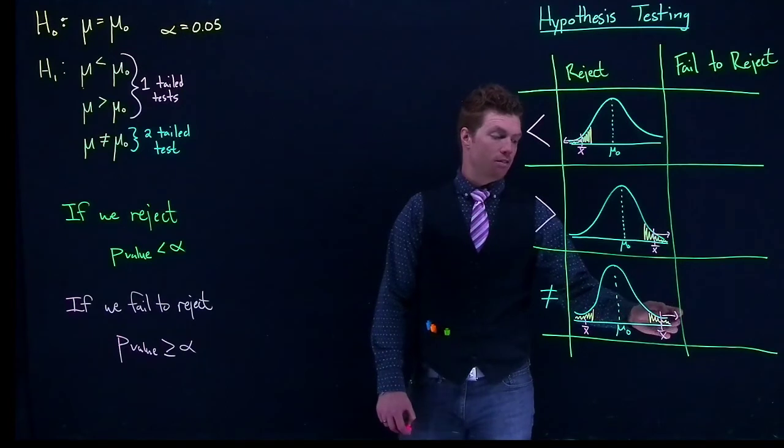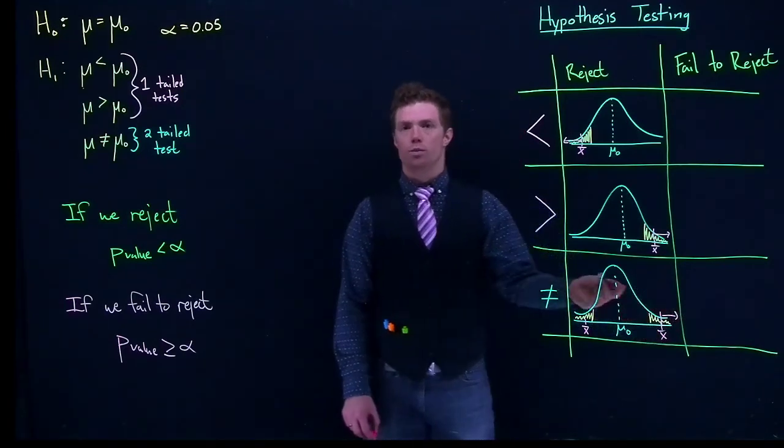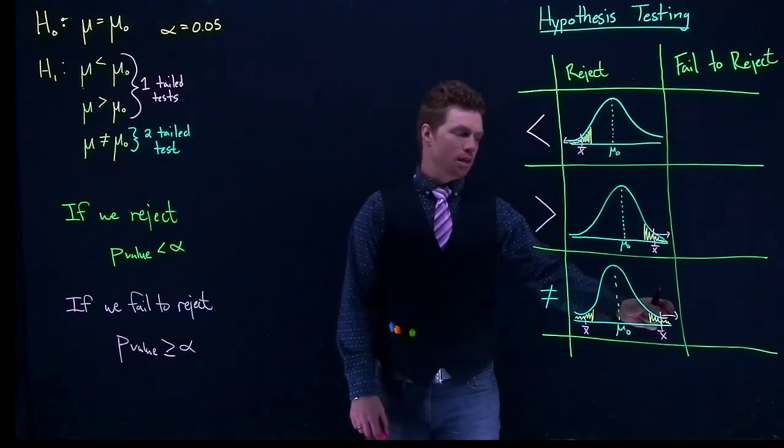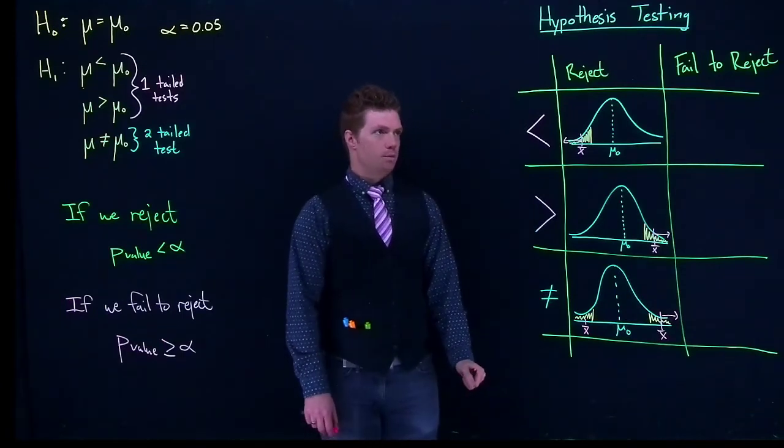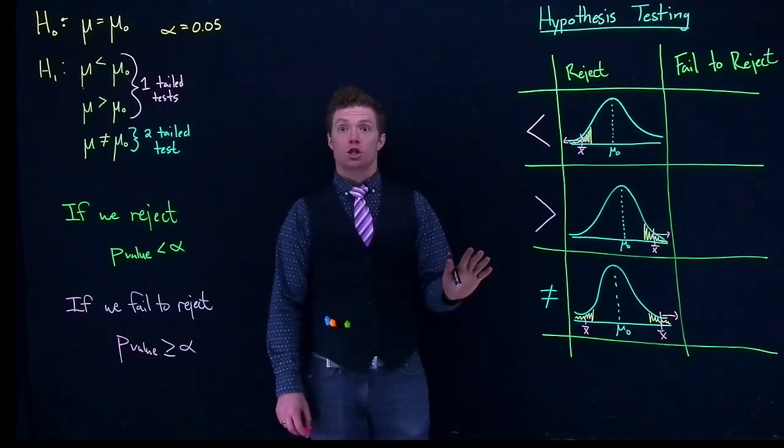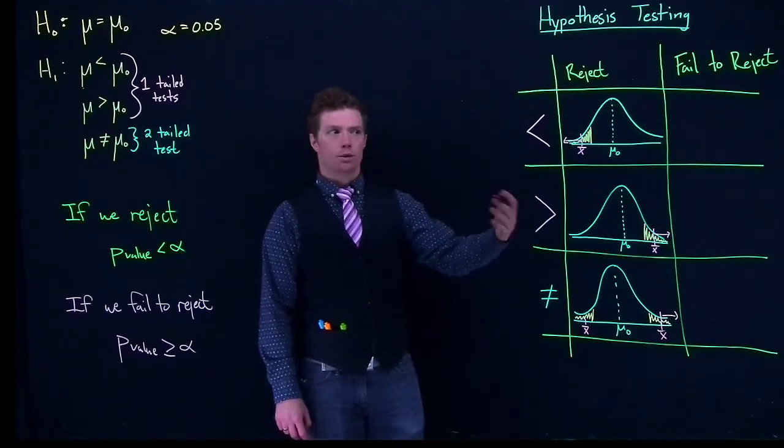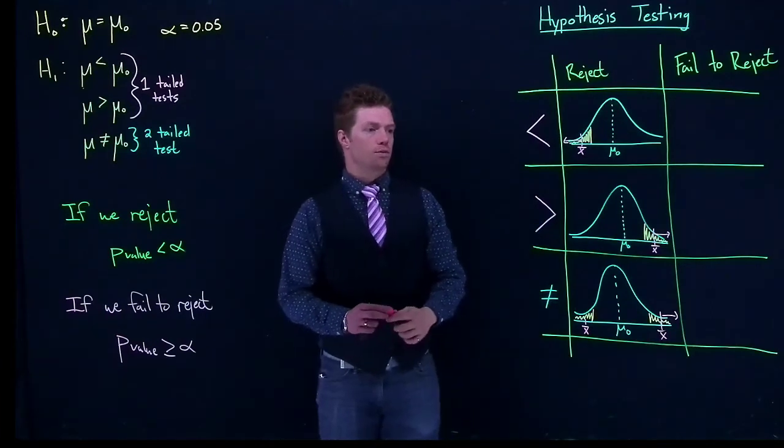If you just calculate the alpha from just this point over, your p-value, especially when you're using your software, won't match up. The reason is because the software automatically knows to double it. But just looking at rejection criteria, just landing graphically when you're landing in the rejection region, this is what it looks like for all of these scenarios.